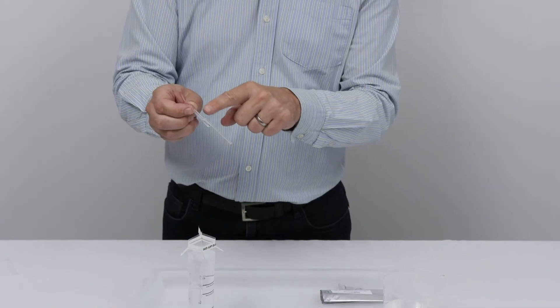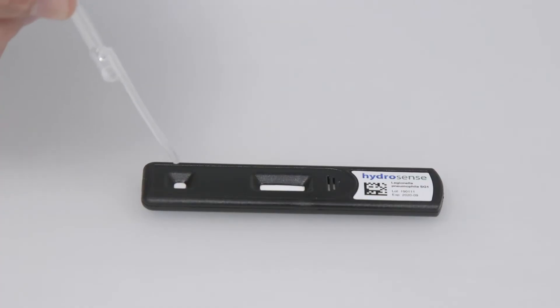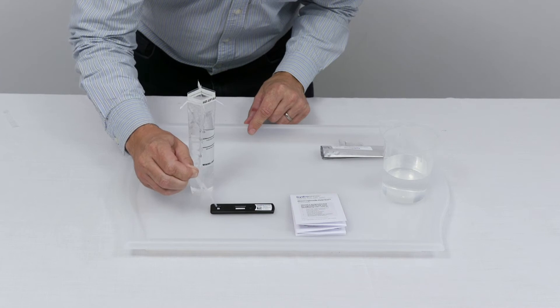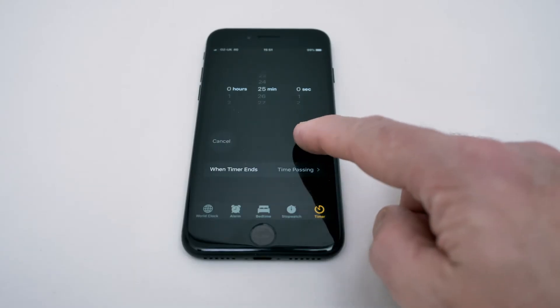To transfer the liquid from the pipette to the test, we again press the top bulb whilst only over the sample port. Make sure that all the liquid is expelled and then start a timer for 25 minutes.